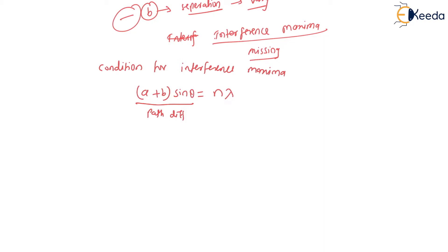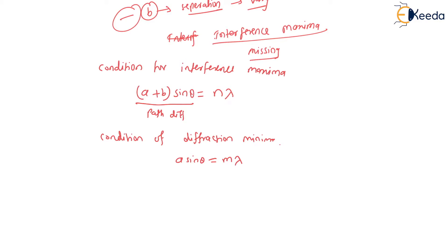Now we find the condition for diffraction minima. The condition is: a × sin θ = mλ. Here both n and m are integers with different values. Let this be equation one and the diffraction minima condition be equation two.